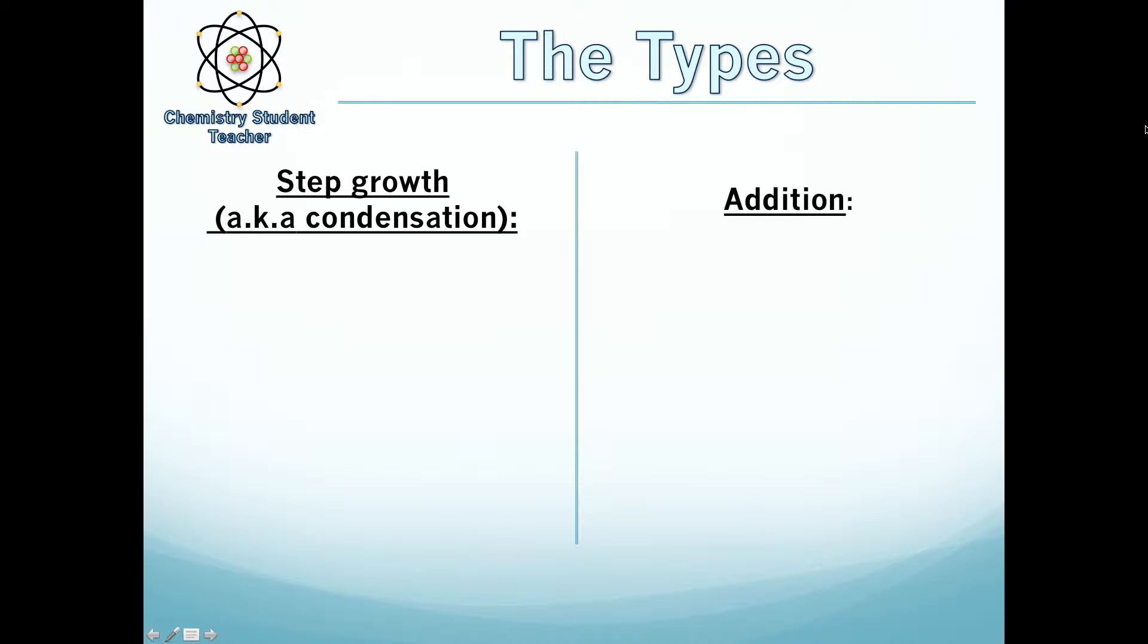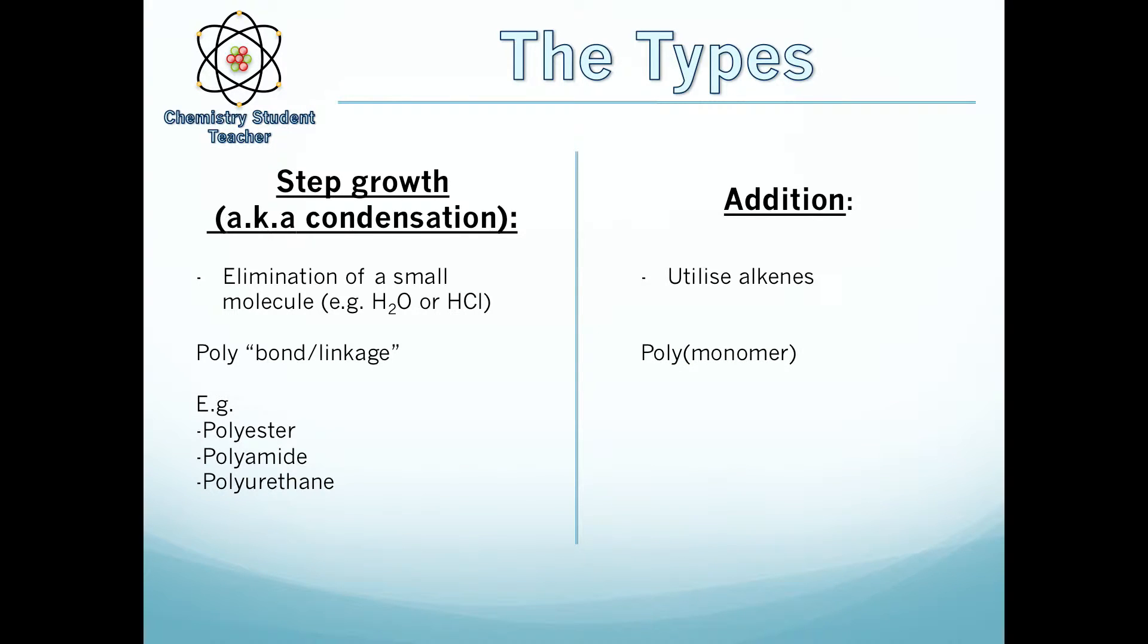So just to remind you, what are the two different types? We have step growth, also known as condensation polymerization. It's called condensation because it has the elimination of a small molecule, such as water or HCl. It's named after the poly and then the bond or linkage, such as polyesters, polyamides and polyurethanes. But now what we're going to talk about today is addition. They utilize alkenes, so specifically the C2C double bond. They are named after poly and then monomer. So we have polystyrene where the monomer is styrene, polyethene where the monomer is ethene, and polypropene where the monomer is propene.